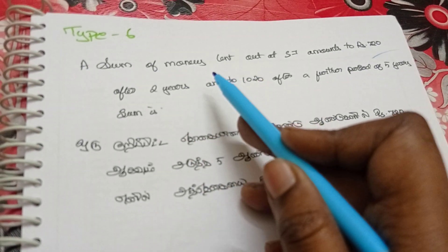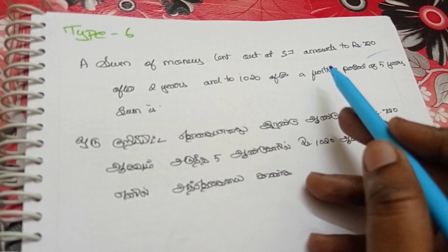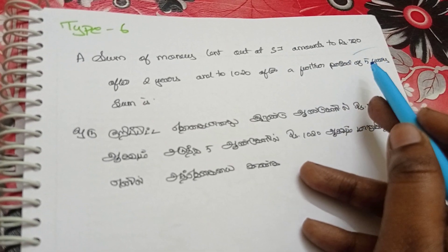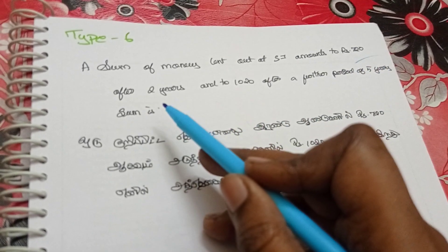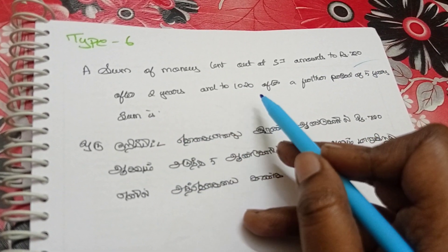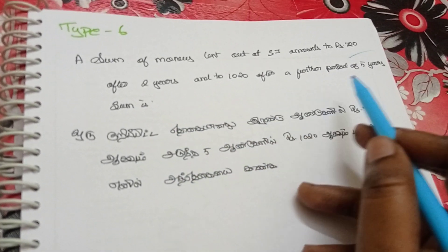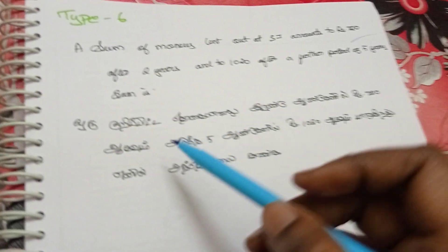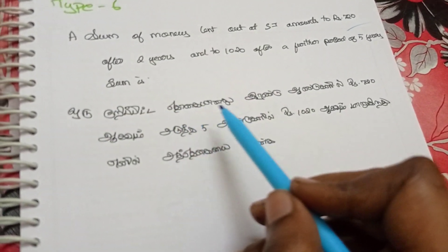A sum of money is lent out at simple interest and amounts to Rs.720 after 2 years and to Rs.1,020 after a further period of 5 years. Find the sum.